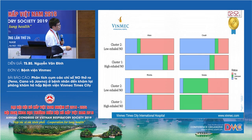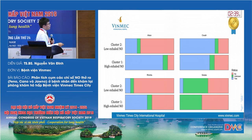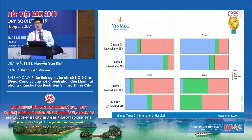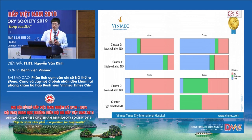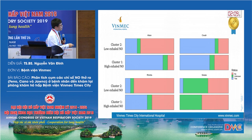Here we have three clusters and we tested the cluster characteristics for atopy or not. Here we have the atopy group. With the low FeNO, we have almost all patients without atopy — without sensitization to allergens and without atopic disease symptoms. And almost all patients with high FeNO have atopy status.